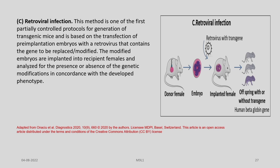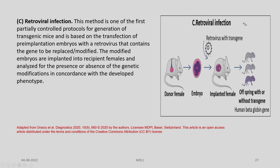The third method is retroviral infection. This method is one of the first partially controlled protocols for generation of transgenic mice and is based on the transfection of pre-implantation embryos with a retrovirus containing the gene to be replaced or modified. The modified embryos are implanted into recipient females and analyzed for presence or absence of genetic modifications in concordance with the developed phenotype. These can be used with genome editing technologies ZFN, TALEN and CRISPR-Cas9. In this approach, a donor female provides the embryo, which is infected with a retrovirus carrying a transgene and then re-implanted into a surrogate mother, yielding offspring with or without the transgene.